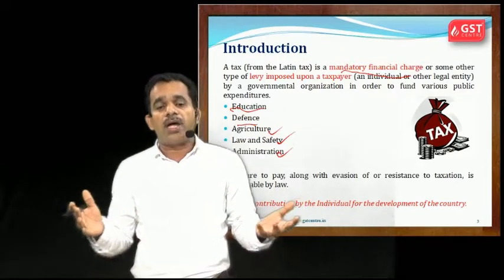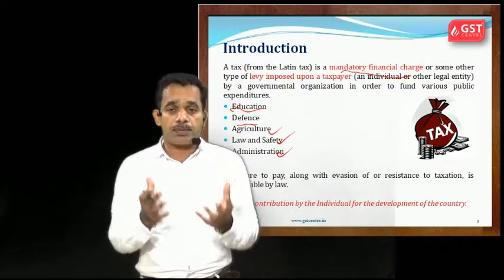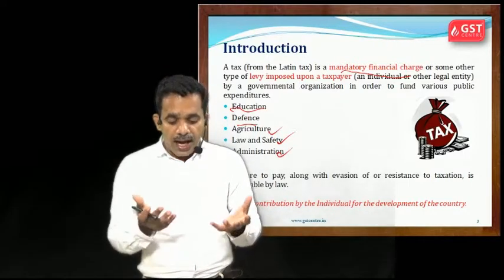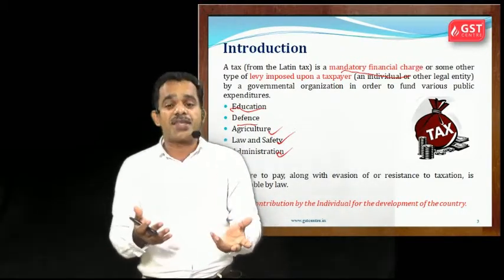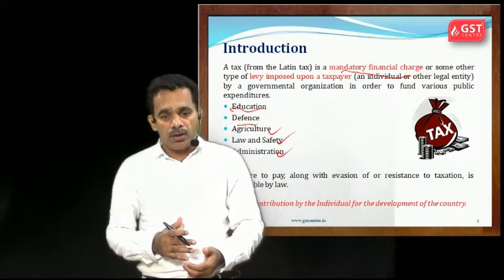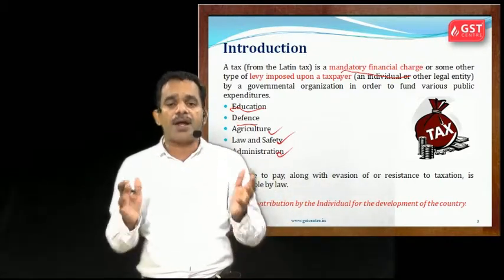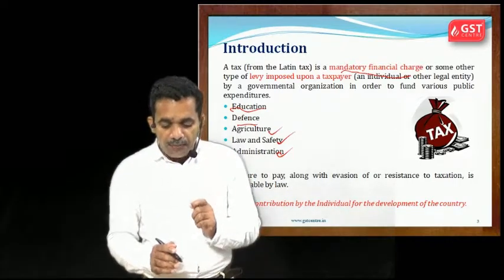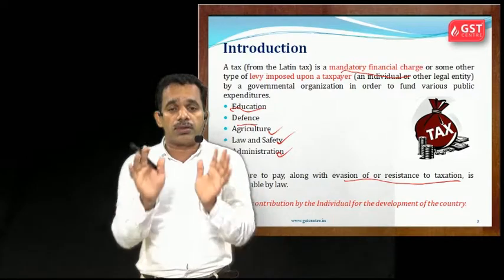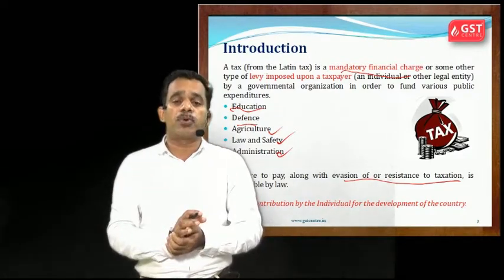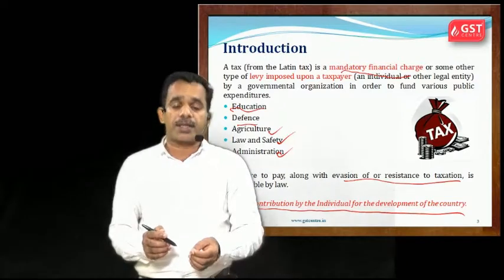Just imagine how government schools are running, or defense — we have one of the largest defense systems in the world. So much cost is involved. There are various subsidies and schemes for farmers and other communities, and courts and administration all need to be managed. A failure to pay, or evasion and resistance to taxation, means the government can impose penalties or punishments.